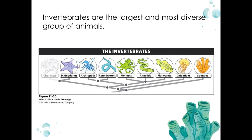Invertebrates are not only the largest group of animals, they're also the most diverse. Although the invertebrate grouping has a convenient and easy-to-apply definition — the lack of a backbone — invertebrates are not a monophyletic group. In fact, there is one large group of invertebrates that are deuterostomes, like the vertebrates. This group is Echinodermata, which includes sea stars, sea urchins, and sand dollars. This phylum shows the same back-to-front gut development as the vertebrates and represents the chordates' closest relatives.